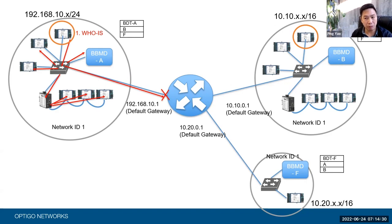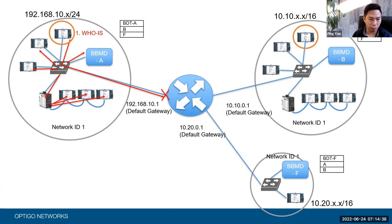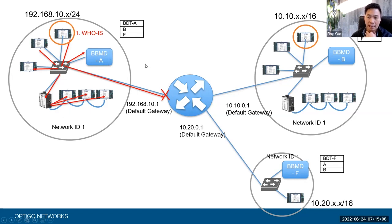That's where the BBMD comes into play. A BBMD is most of the time not a separate device — most of you have probably noticed that. It's just a function of another BACnet IP device. You see how this WhoIs hits every device in its subnet, including the device that's marked as a BBMD. We're going to call it BBMD-A.